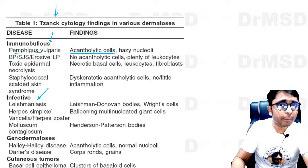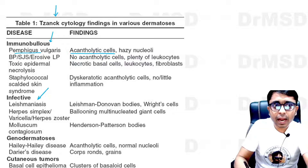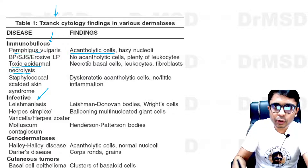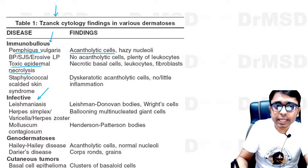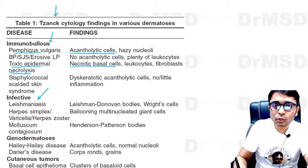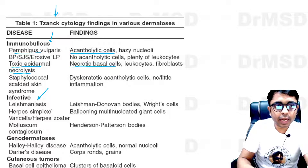In the case of toxic epidermal necrolysis (TEN), which is a severe cutaneous adverse drug reaction to various drugs, we can see necrosed basal cells — that is, necrosed keratinocytes — on the Tzanck smear.